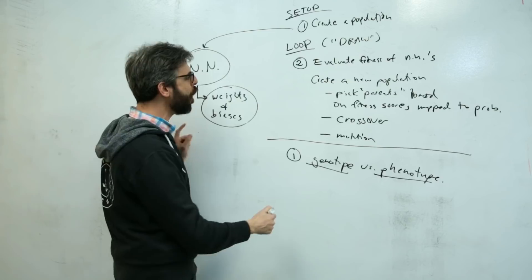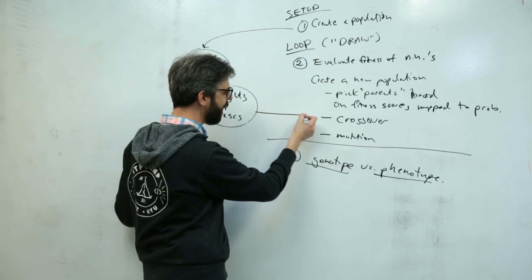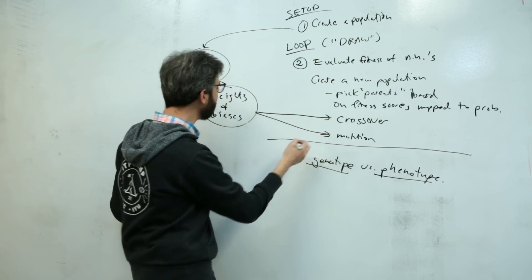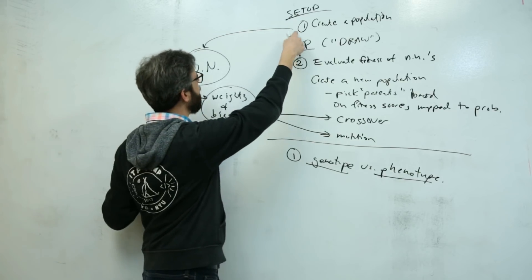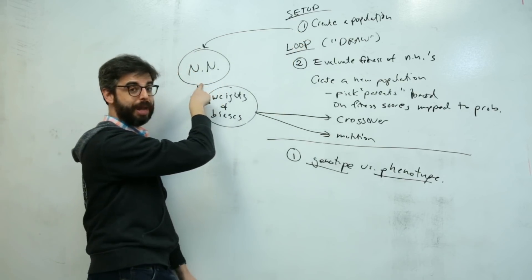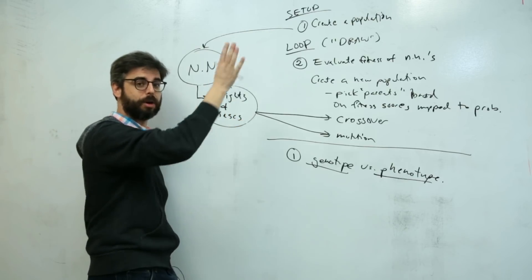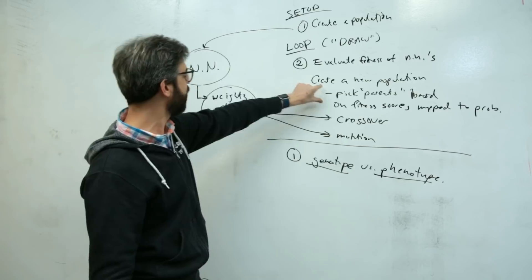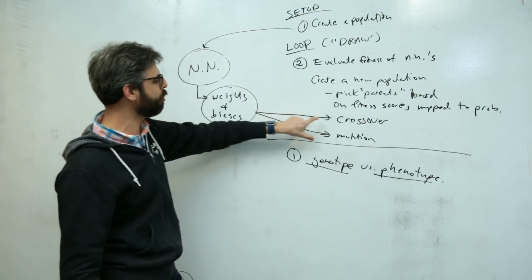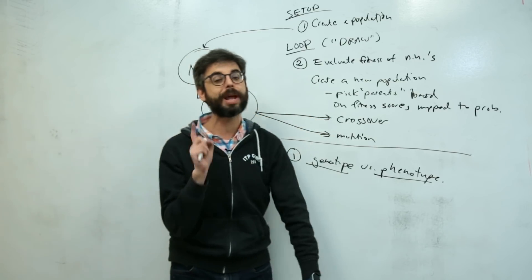What that means is when I write the code, I need to somehow figure out how to do crossover and mutation with weights and biases. I think I can create a population of random neural networks. Evaluating the fitness I've got to get to. I can pick two random ones but I need to apply crossover and mutation.